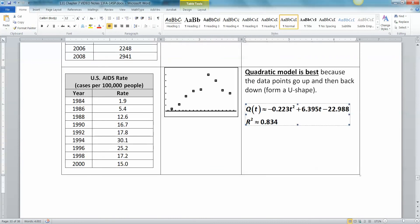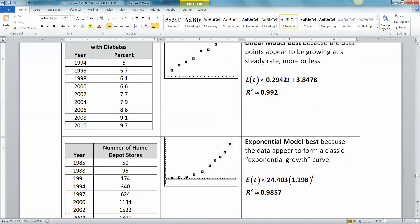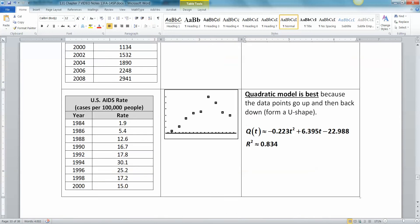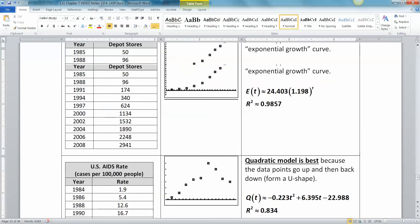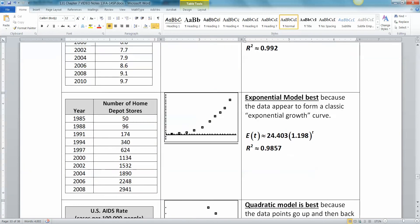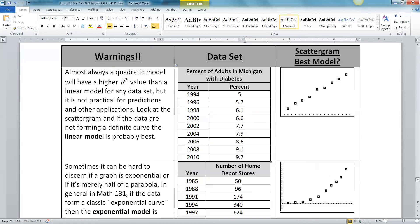So now you know how to find R squared for any kind of model. You know how to find a linear model, an exponential model, and a quadratic model. And you're beginning to understand when to choose which one. But there are some cautions for that.